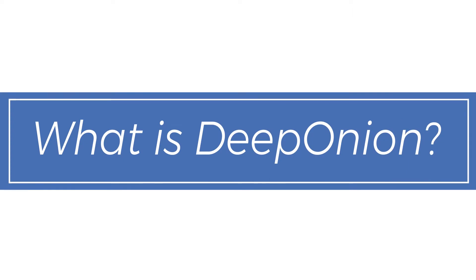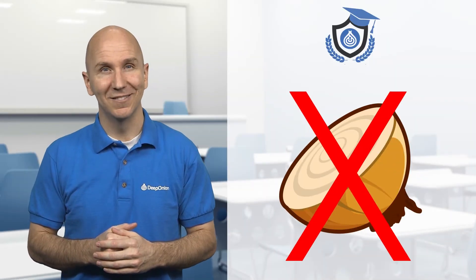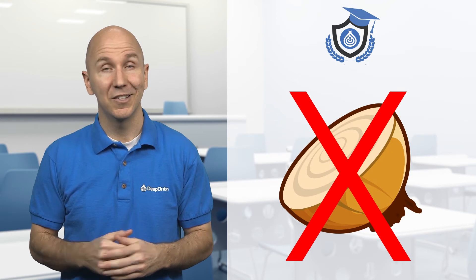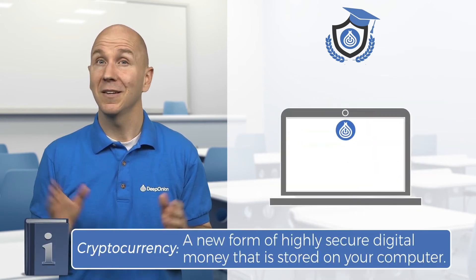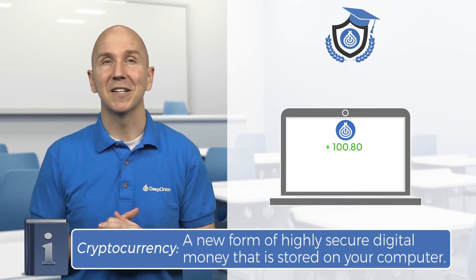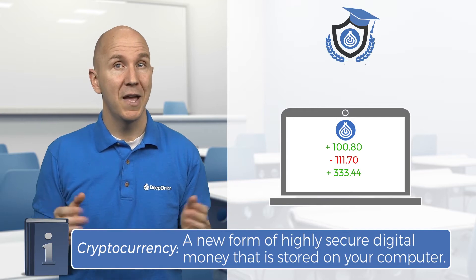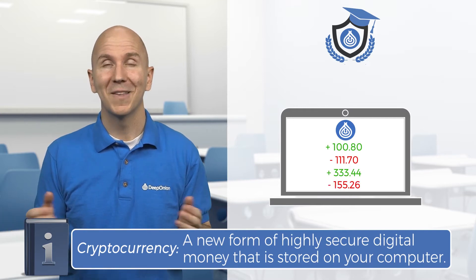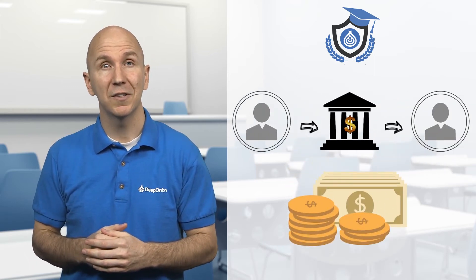What is Deep Onion? First off, it's not something that you eat — you spend it like real money. Deep Onion is a new type of digital currency, or digital money, called cryptocurrency. Digital because the money is stored on a computer and can be sent through them, unlike current payment methods such as banknotes, coins, and wire transfers.